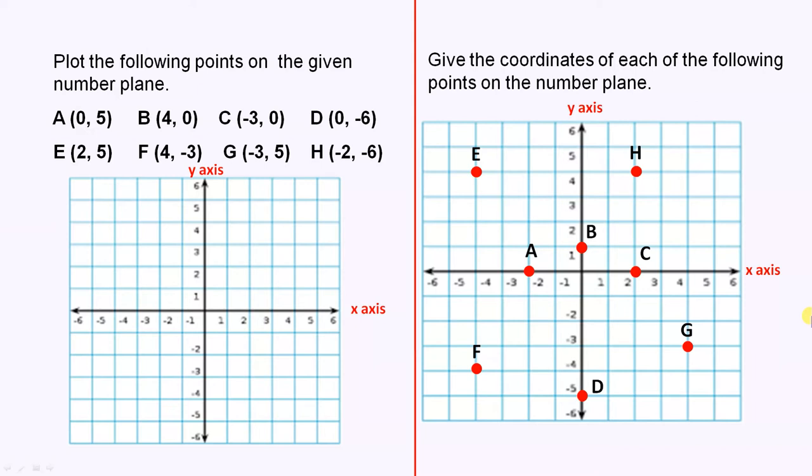we explained that ordered pairs consisted of two numbers, and these numbers were placed in brackets or grouping symbols like this.